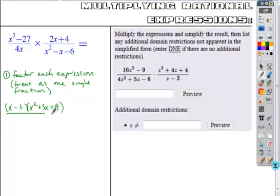Okay, that's all divided by my monomial factor, 4x. So I treat that just as a single fraction written in factored form.